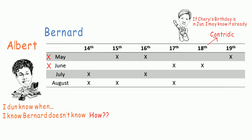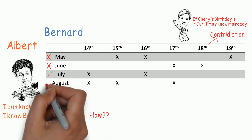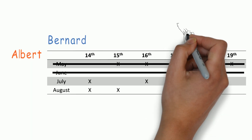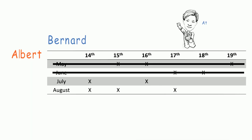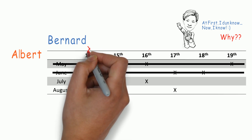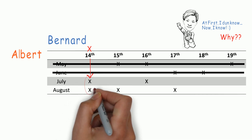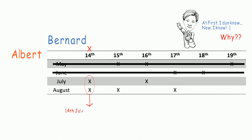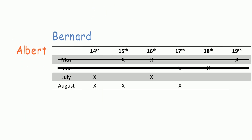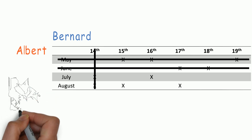That would give a contradiction. Hence, June is not the month, neither is May. We strike off May and June. Now, Bernard says: At first, I did not know when Cheryl's birthday is, but now I know. The reason is that Bernard was not told the 14th. If Bernard were told the 14th, he would have difficulty knowing whether it's 14th July or 14th August, leading to a contradiction. We strike off the 14th column.